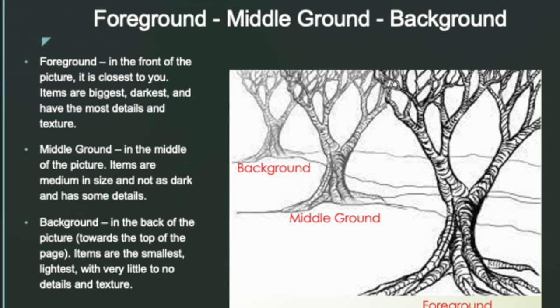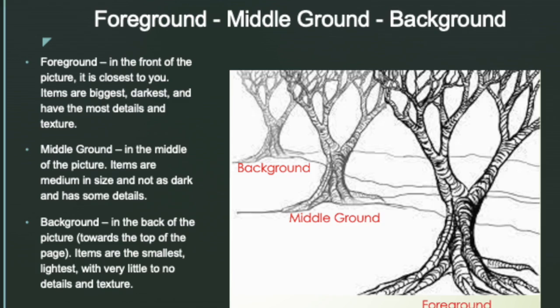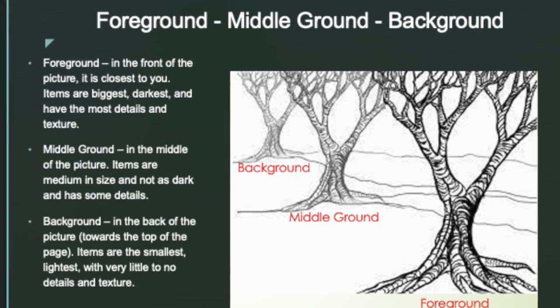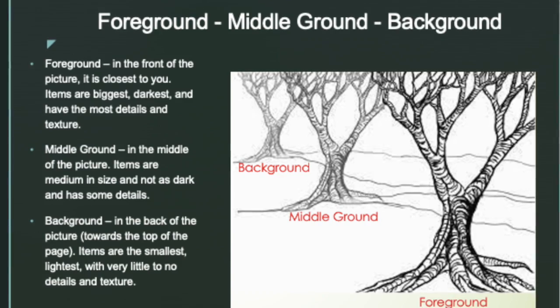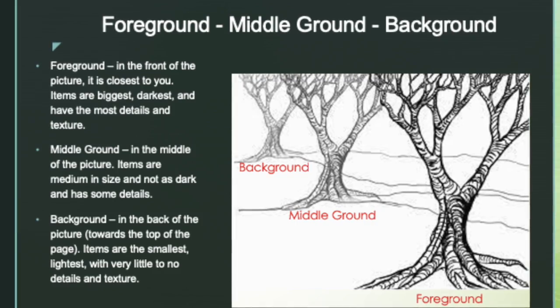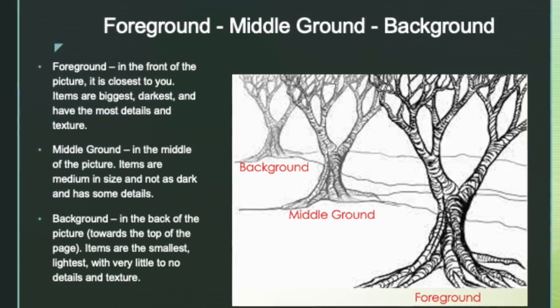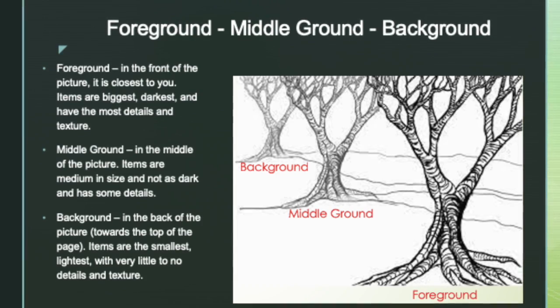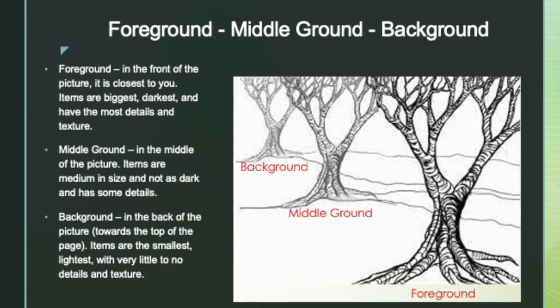One of the things you learned about in second and third grade is foreground, middle ground, and background space in an artwork. Artists use different techniques to show foreground, middle ground, and background in an artwork, and by using these techniques, it helps show depth and distance. You are going to be using some of these techniques in this artwork as well.